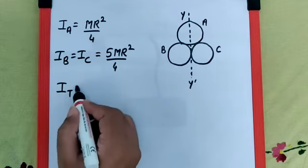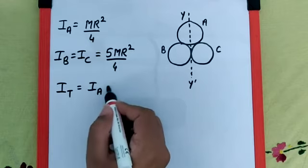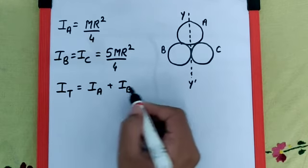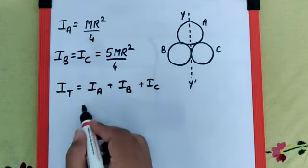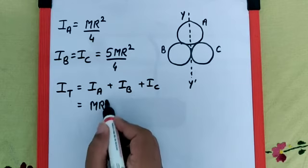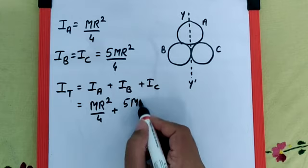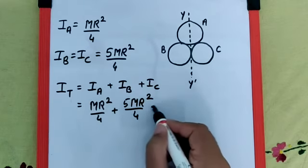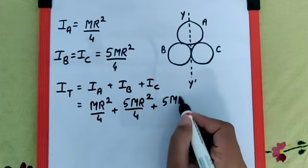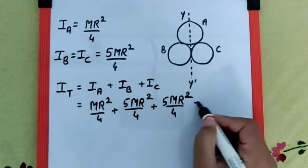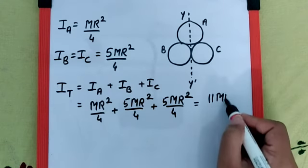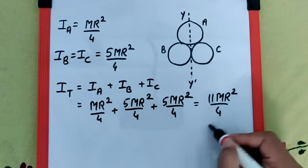Therefore, the I total is going to be I A plus I B plus I C, which is MR square by 4 plus 5 MR square by 4 plus 5 MR square by 4, that makes it 11 MR square by 4, which is the final answer.